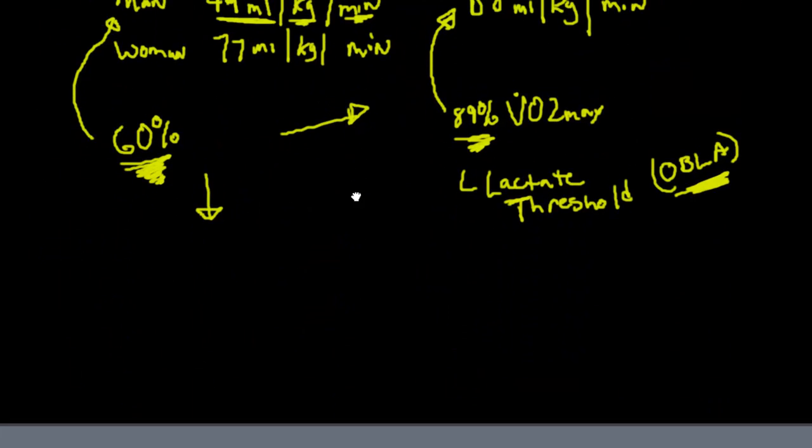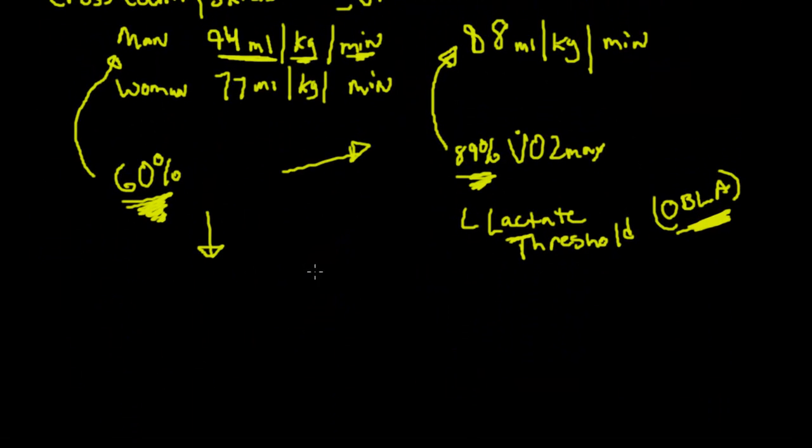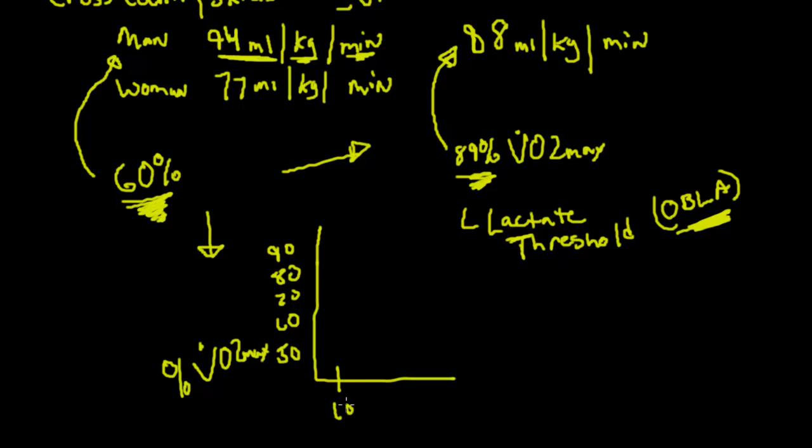Let me give you a real quick explanation of lactate threshold just in case you haven't seen the video. Let's say these are percentages of VO2 max. So this is percent VO2 max. You're able to train at a percent of VO2 max. And let's say this is time here, 20, 30 minutes.